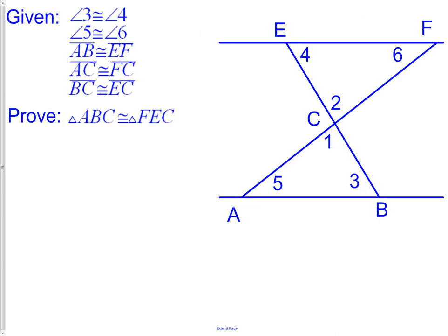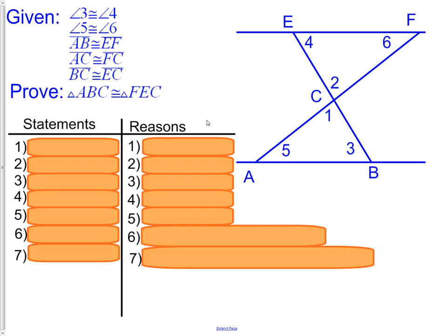Here is another proof. We are again given some information, and we are trying to prove that two triangles are congruent. You will notice I have set it up exactly the same way again. The last two proofs both had seven reasons and seven statements. It won't always have to be seven. It could be six and six, or it could be four and four, or it could be twelve and twelve. But there will always be the same number of statements as there are reasons.